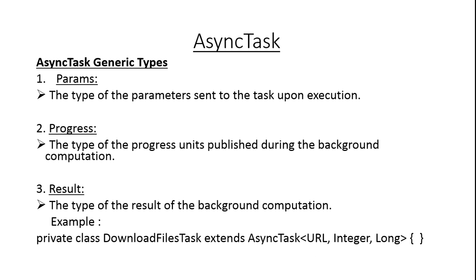Here is a simple example that demonstrates the generic types of AsyncTask. There is a class called DownloadFileTask that extends AsyncTask. Here the first generic type is Params, which is URL; the second argument is Progress, whose type is Integer; and the last parameter is Result, whose type is Long.